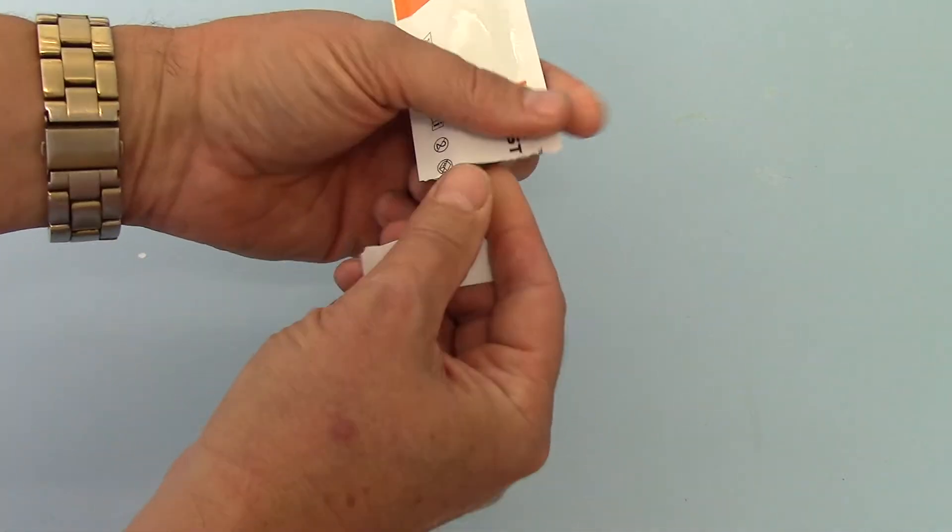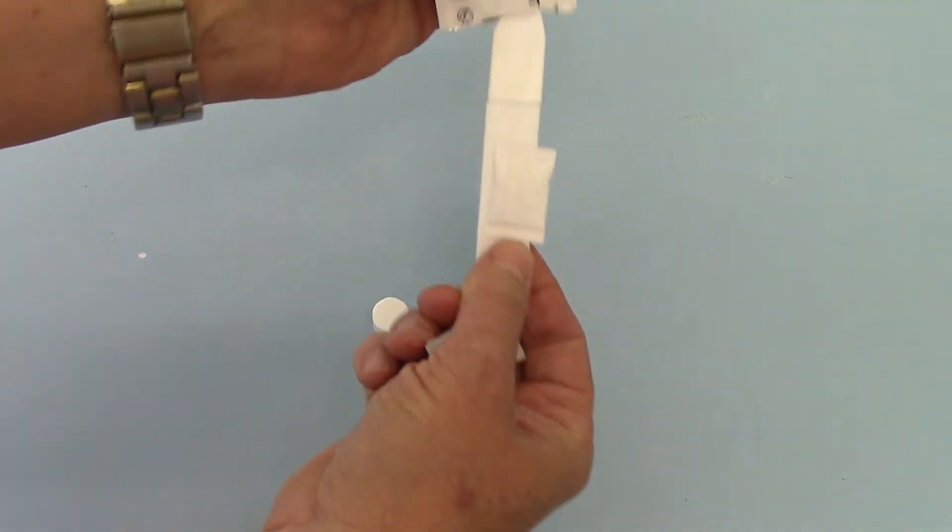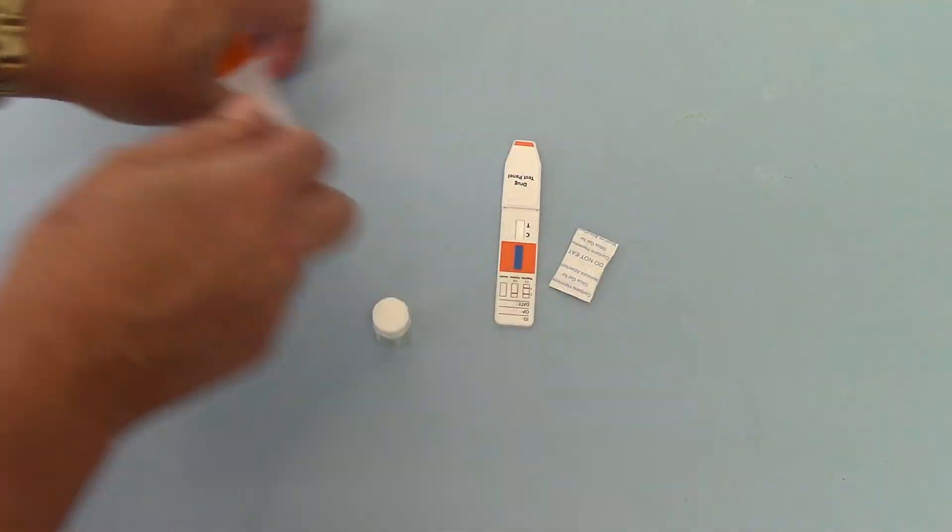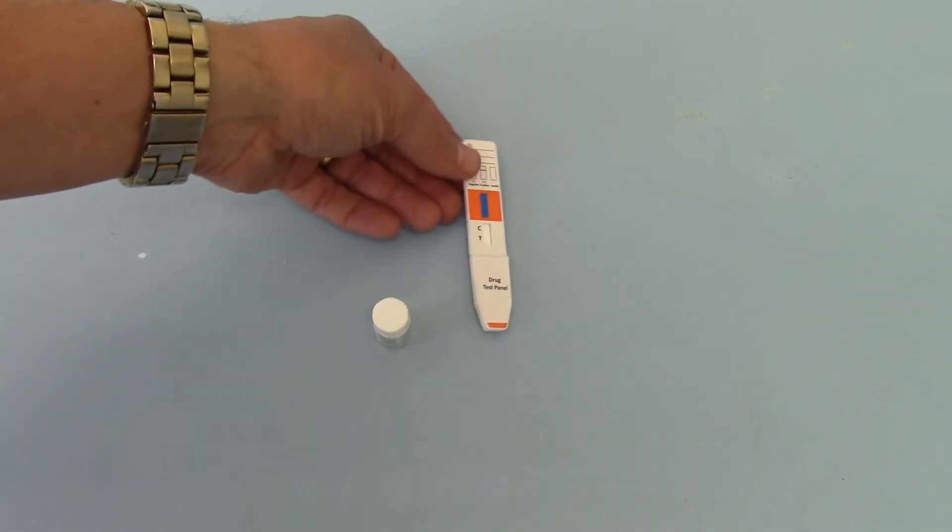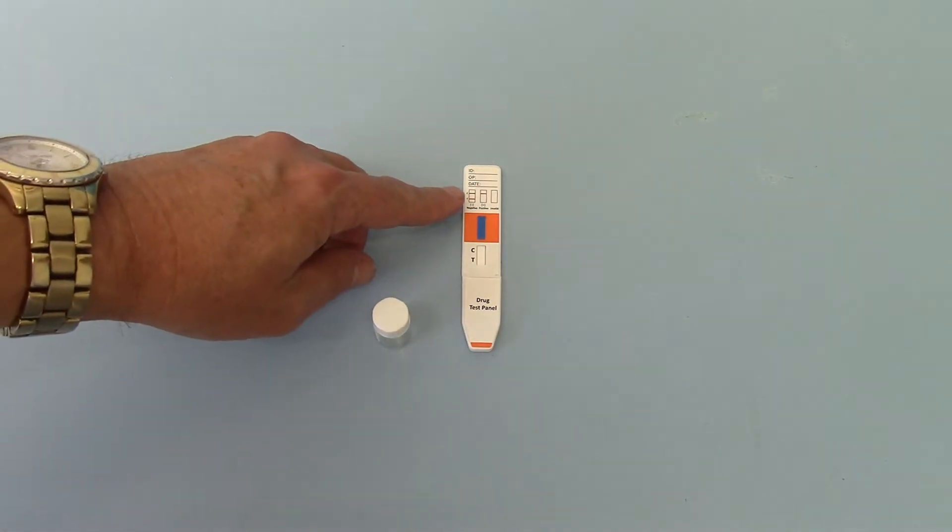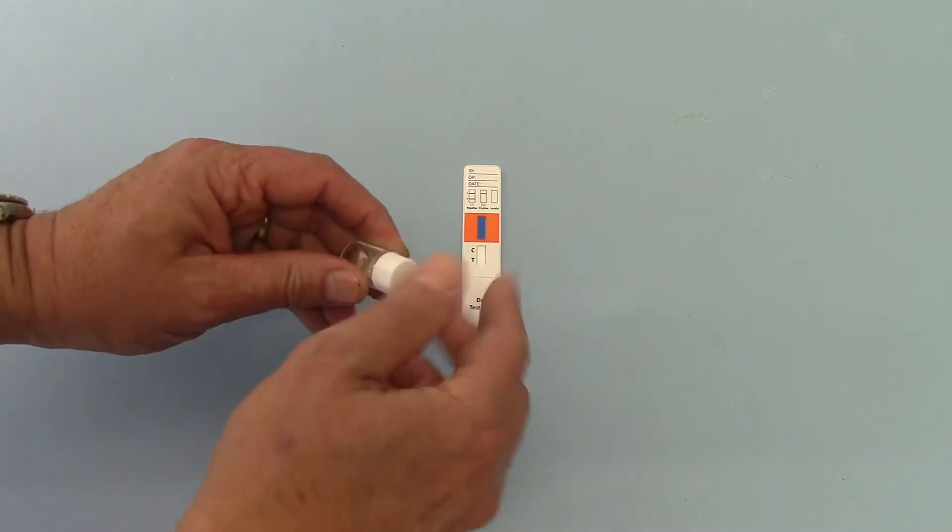So if I just remove this test from its foil, you get a bag of desiccant which is just to keep the test dry. And then this is your test panel with a control and test line with indicative results on the top of the panel.